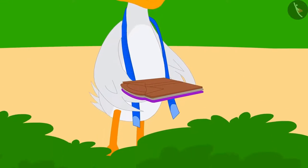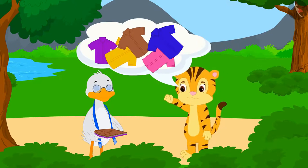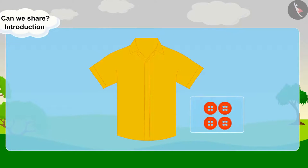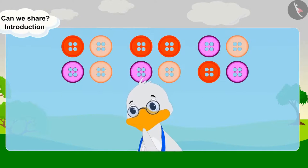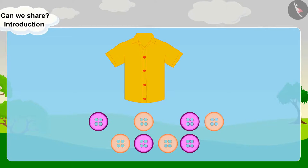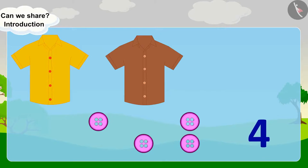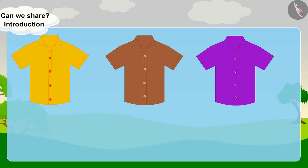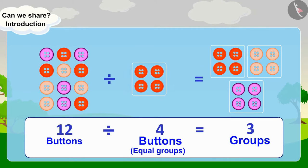Shere Khan's mother asked Barbole the Taylor to make some shirts for Shere Khan's special friends. The Taylor attaches 4 buttons to each shirt. He has 12 buttons. Let's see how many shirts he will be able to put buttons on. After putting 4 buttons on the first shirt, the Taylor had 8 buttons left. After putting 4 buttons on the second shirt, 4 buttons are left. After putting 4 buttons on the third shirt, all the buttons are over. After creating groups of 4 buttons, 12 buttons were divided into 3 groups.